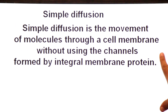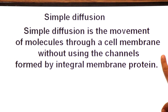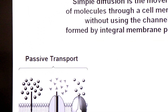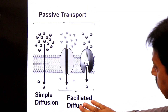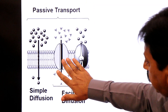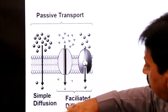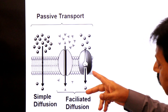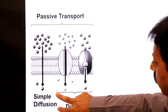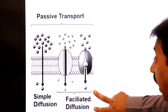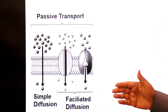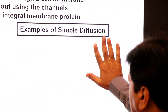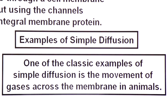In simple diffusion, molecules — usually gases — cross the plasma membrane without using any channel protein. In facilitated diffusion, channel proteins are used. If no channel protein is used in crossing, it is simple diffusion; if a channel protein is used, it is facilitated diffusion.